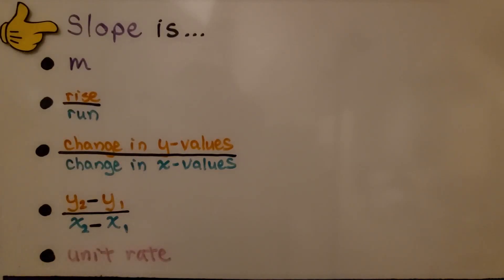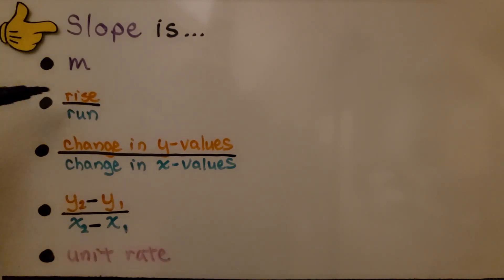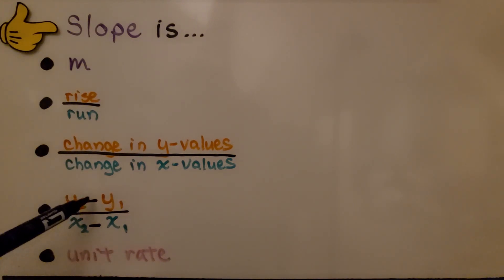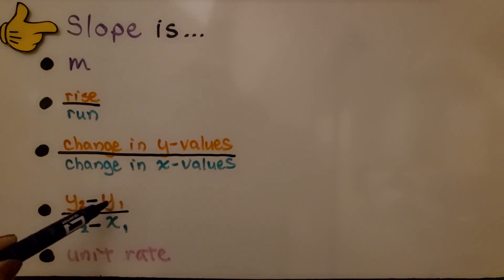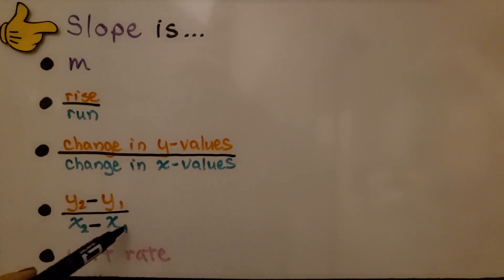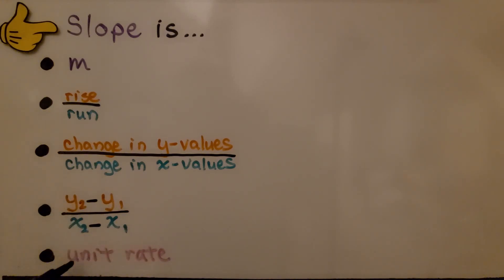For your notes: slope is m. It's the rise over the run — the change in y-values over the change in x-values. It's the second y-value minus the first y-value over the second x-value minus the first x-value. That's the rise over the run, and it's also the unit rate.